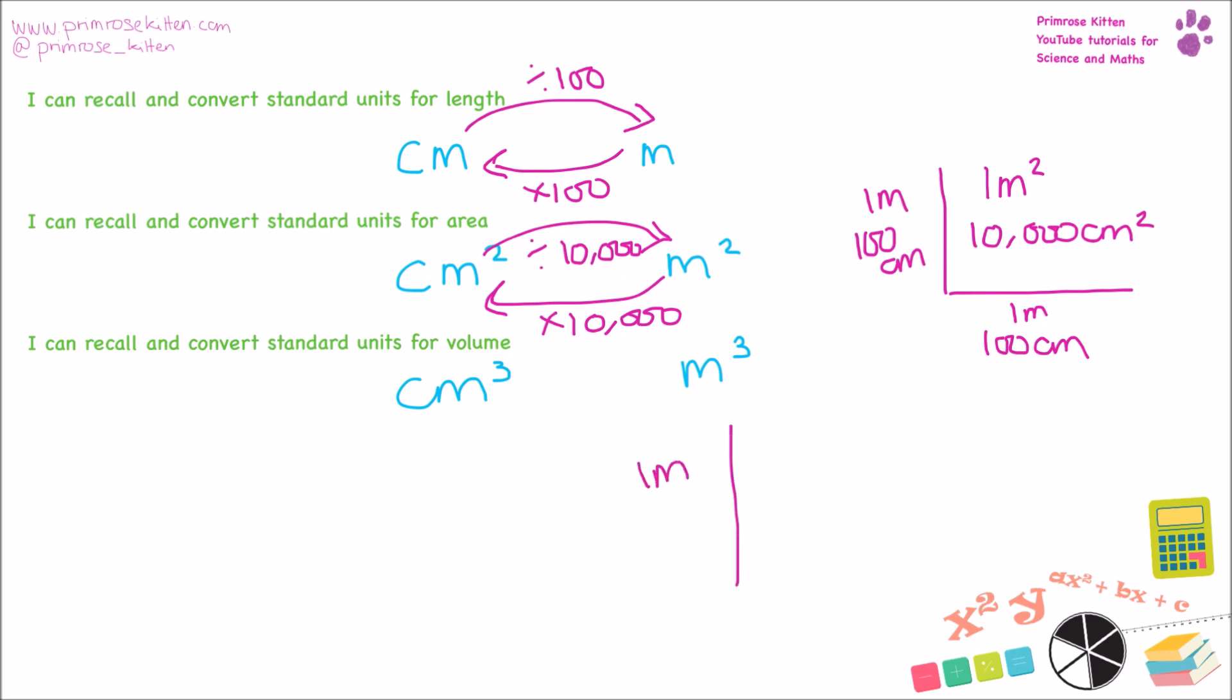Because one meter cubed is one meter by one meter by one meter. So one meter is a hundred centimeters. One meter, a hundred centimeters. One meter, a hundred centimeters. So one meter cubed is going to have one, two, three, four, five, six zeros after it. One, two, three, four, five, six centimeters cubed after it. So this is a bit more complicated.